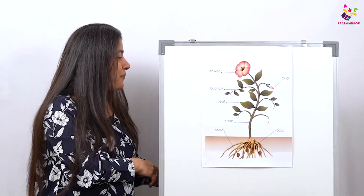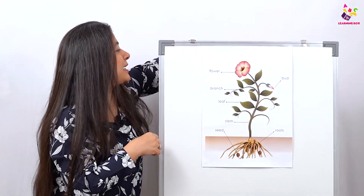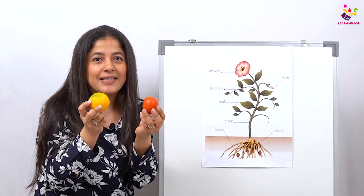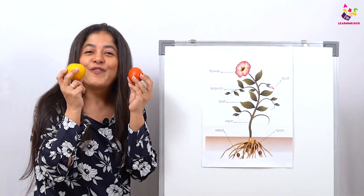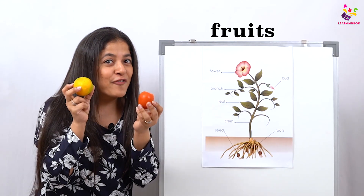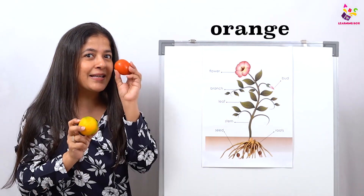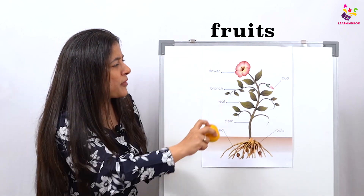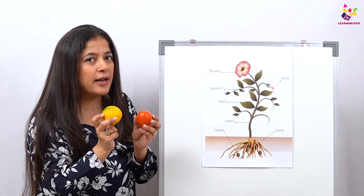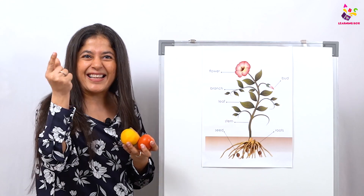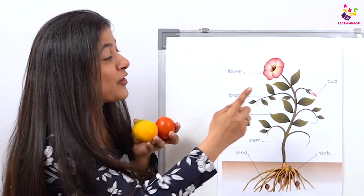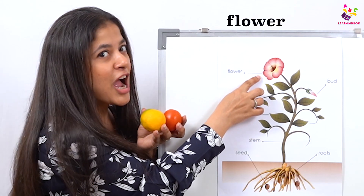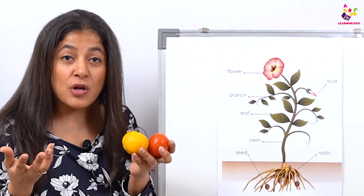Now let me see what I have here. What are these fruits? Orange and tomato — they are fruits! So what part of the plant are they? Excellent job! These were first buds, then they became flowers, and when the flowers ripened they turned into fruits. Superb!